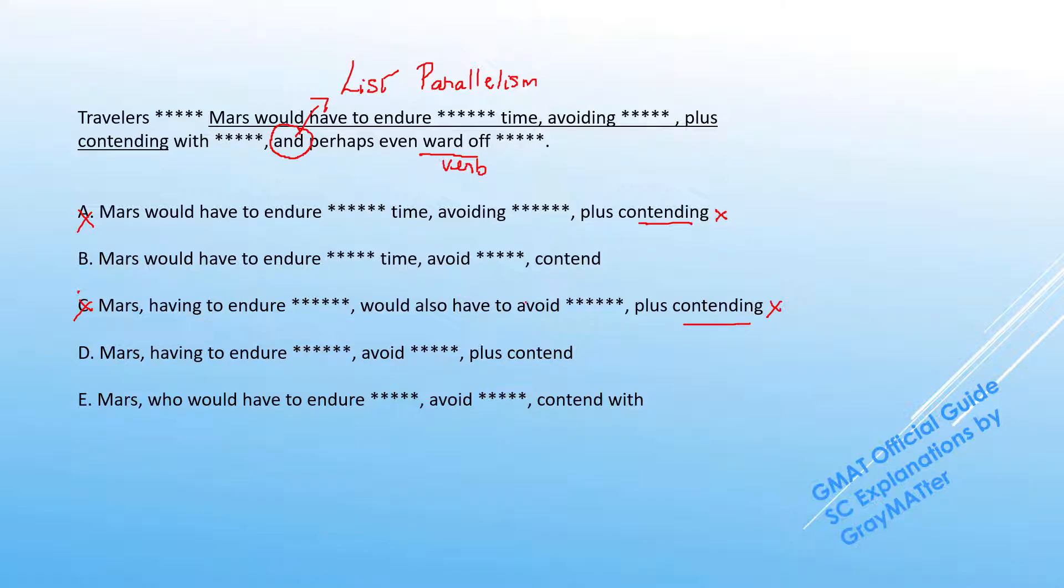Now let's look at the other list. We have 'contend' here, we have 'avoid' here, we have 'endure'. So B looks perfectly fine because B is reading they would have to endure, avoid, contend, even ward off. This looks perfectly fine. I'm going to hold on to B.